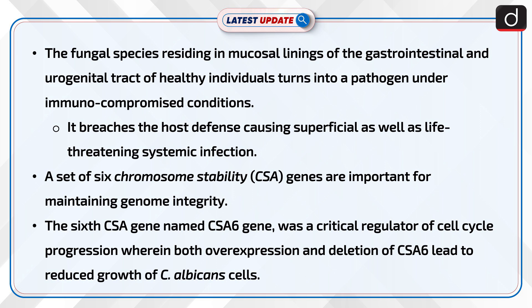A set of six chromosome stability, i.e. CSA genes, are important for maintaining genome integrity. The sixth CSA gene, named CSA6, was found to be a critical regulator of cell cycle progression, wherein both overexpression and deletion of CSA6 led to reduced growth of Candida albicans cells.